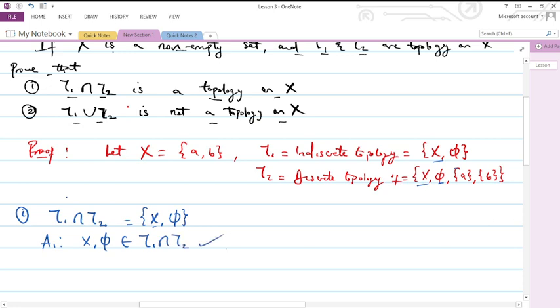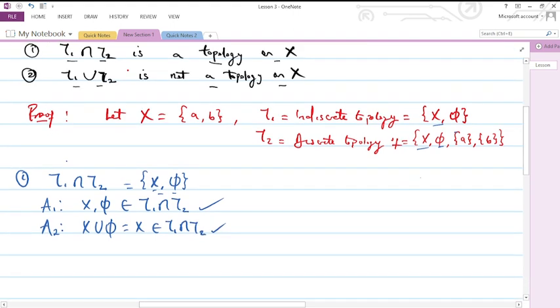So this satisfies the first axiom. The second axiom which is the union of the members of T₁ ∩ T₂ also satisfies the second axiom.